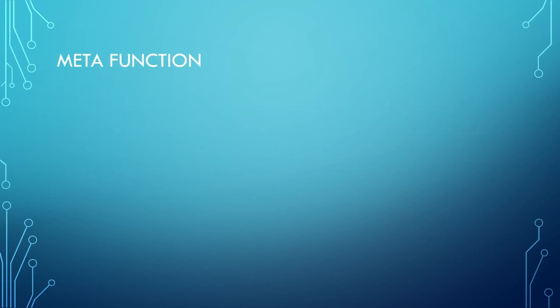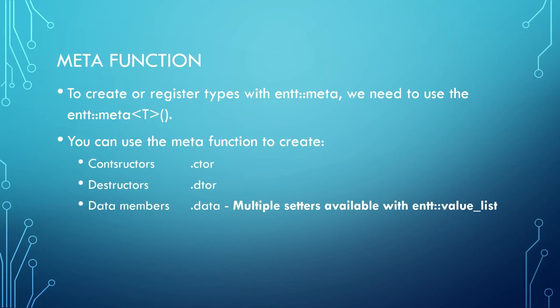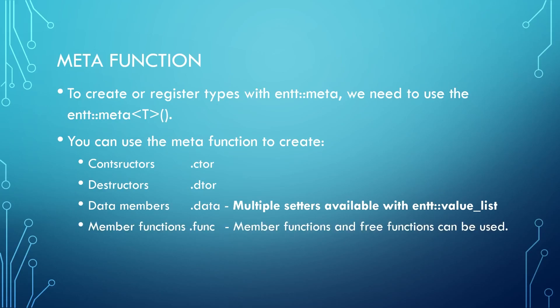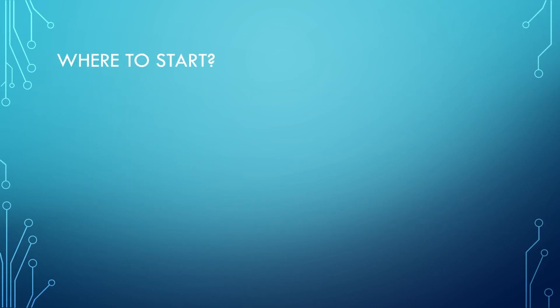In order to create or register types, we need to use the ENTT meta function. The meta function returns a factory that we can use to build up the type that we are reflecting. You can use the meta function to create constructors, destructors, member variables or data members. Multiple setters are available using the ENTT value list if needed. Member functions and free functions can also be used here as well.